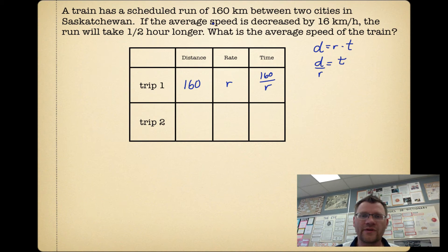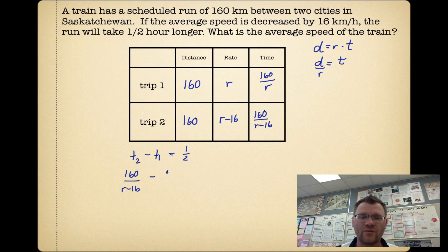Our second trip, when we decrease the speed, is still 160 for the distance. The rate, however, is going to be 16 kilometers less, so it's r-16. And that means our time is going to be 160/(r-16). Now, it says if we decrease the speed, the time is going to take half an hour longer. So that means trip number 2 minus trip number 1 should be a difference of half an hour. So 160/(r-16) minus 160/r equals 1/2.